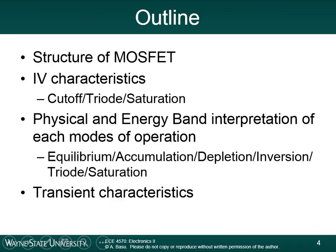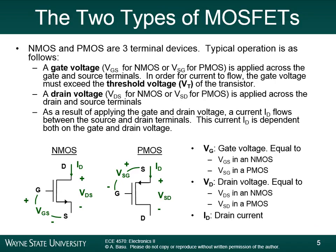We'll also get into transient characteristics if we have time. There are two types of MOSFETs: an NMOS device and a PMOS device. There's a gate voltage applied to the gate and source terminals — for current to flow, the gate voltage must exceed the threshold voltage. There's also a drain voltage applied across the drain and source terminals. As a result of applying the gate and drain voltage, a current ID flows between the source and drain terminals.